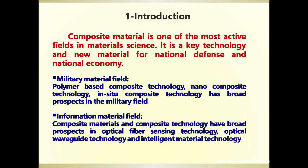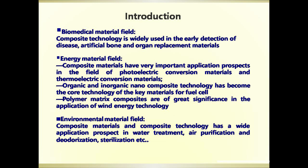For example, in the military material field, polymer-based composite technology, nano composite technology, and in-situ composite technology have broad prospects in the military field. In the information material field, composite materials and composite technology have broad prospects in optical fiber sensing technology, optical waveguide technology, and intelligent material technology. In the biomedical material field, composite technology is widely used in the early detection of disease, artificial bone, and organ replacement materials.